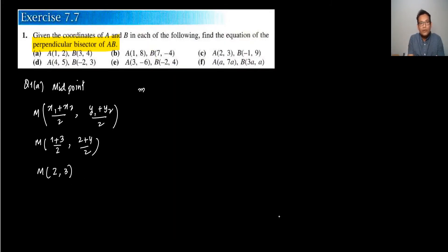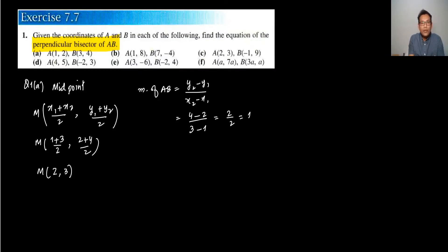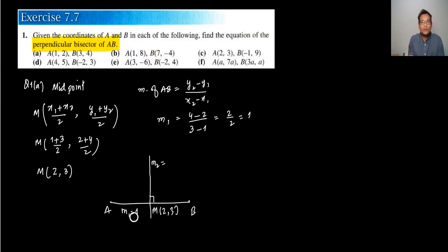We also need the gradient of AB. The gradient formula is Y2 minus Y1 divided by X2 minus X1. So the gradient of AB is 4 minus 2 over 3 minus 1, which gives 2 over 2, so M1 equals 1. Since M1 multiplied by M2 equals minus 1, and M1 is 1, M2 will be minus 1.